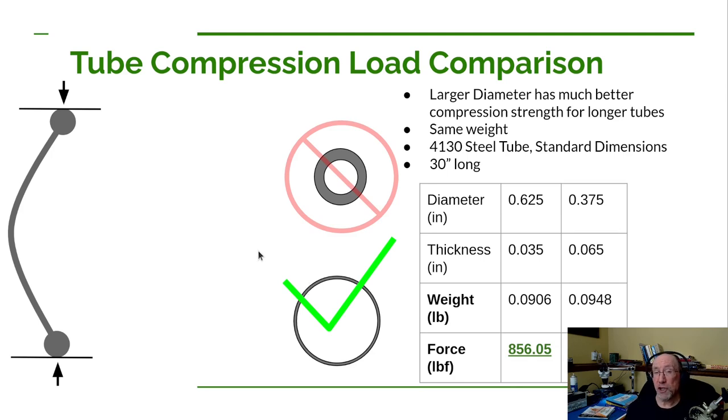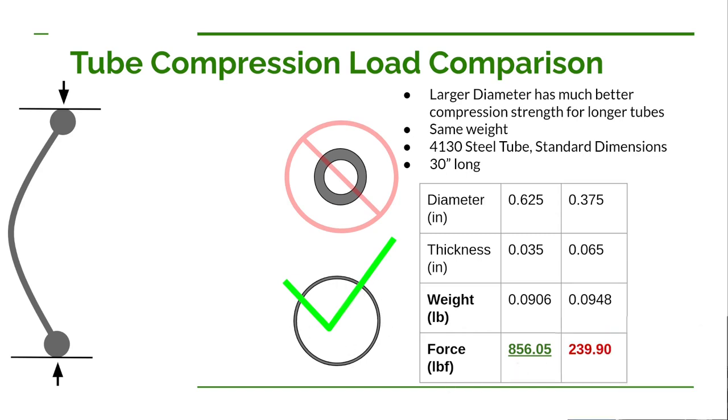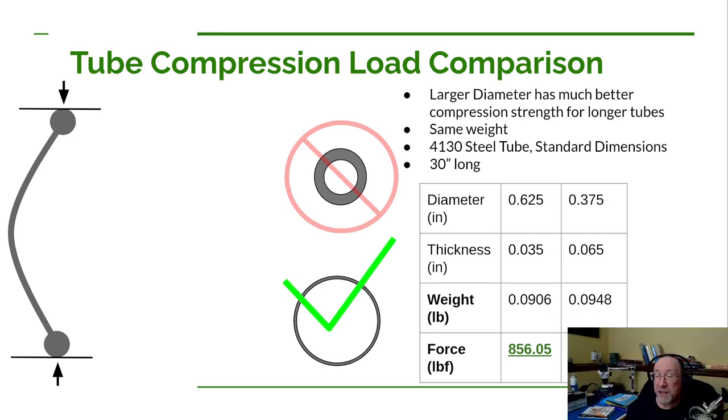But what about the compression loads? Well, I've calculated the compression load down here using that Euler formula we just looked at. The compression load that the large diameter tube can handle is 850 pounds. The compression load that the small diameter tube can handle is 240 pounds. So the large diameter tube can handle more than three times the force of the small diameter tube, even though they weigh the same. Well, that's pretty impressive.